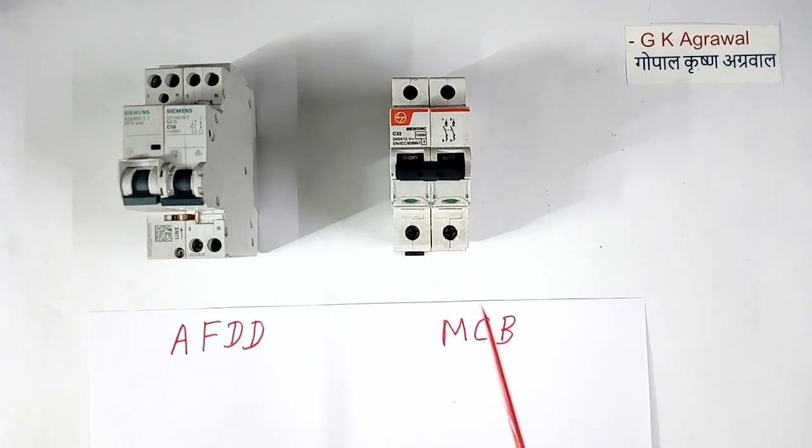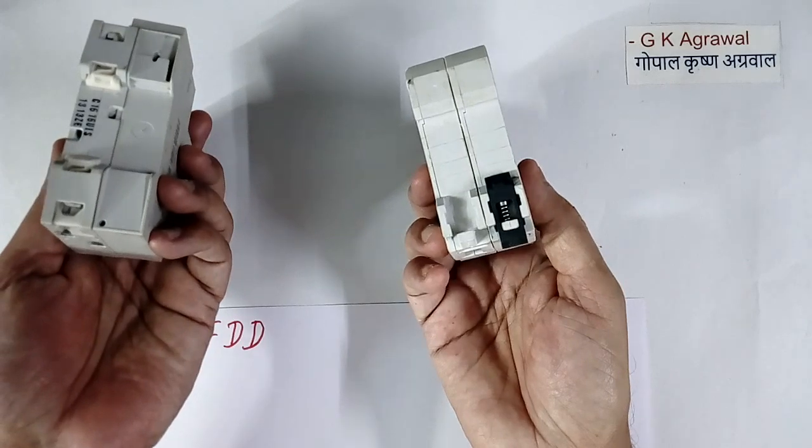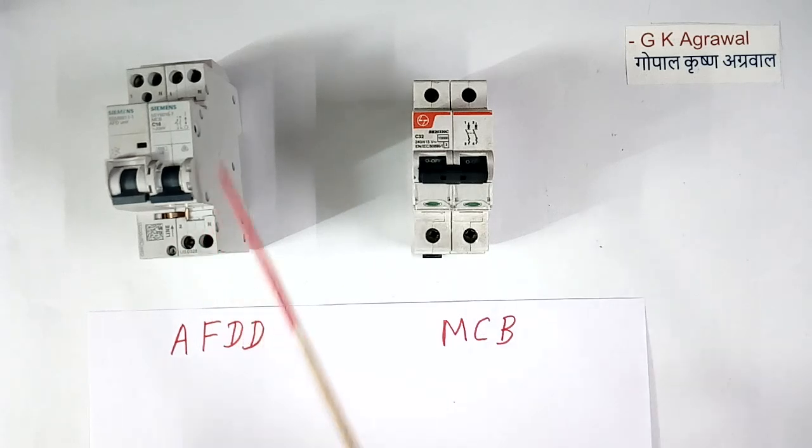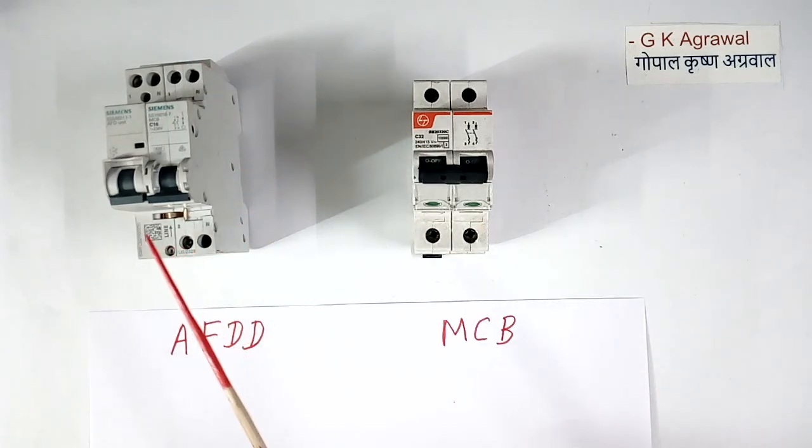This is normal MCB breaker of L&T make. This is AFDD breaker, what we are discussing now, of Siemens make. Both look similar. From back side, mounting arrangement is similar. So if you have this MCB, it is very easy to replace this MCB with this. This has one line and neutral supply, and this is load. No extra supply is required for electronic circuit. Everything is inside. Sometime arc takes lot of time to generate fire. In the mean time, this AFDD can trip the system and you can repair the system.